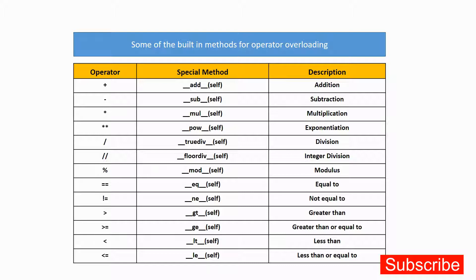For that implementation, Python provides certain built-in methods. The built-in method double underscore add double underscore is used for overloading the plus operator. Every built-in dunder method starts and ends with a double underscore. For the minus operator, we have the __sub__ method. There are also dunder methods for arithmetic and relational operators.